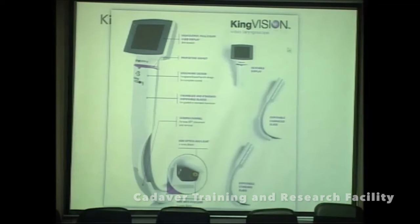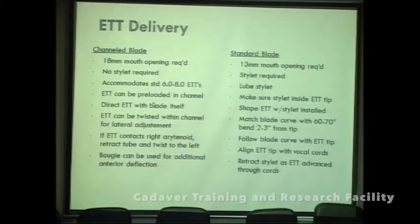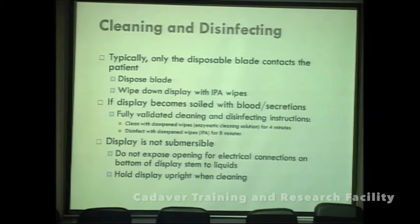The King Vision is also a preloaded tube-loading system and is available for hands-on display. It has two types of blade: a channel blade and a non-channel or channelless blade. The channel blade accommodates tubes of size 6–8. For cleaning and disinfection, disposable blades can be removed and discarded while the handle is sterilized with alcohol; otherwise, low-temperature sterilization or ETO sterilization can be used.